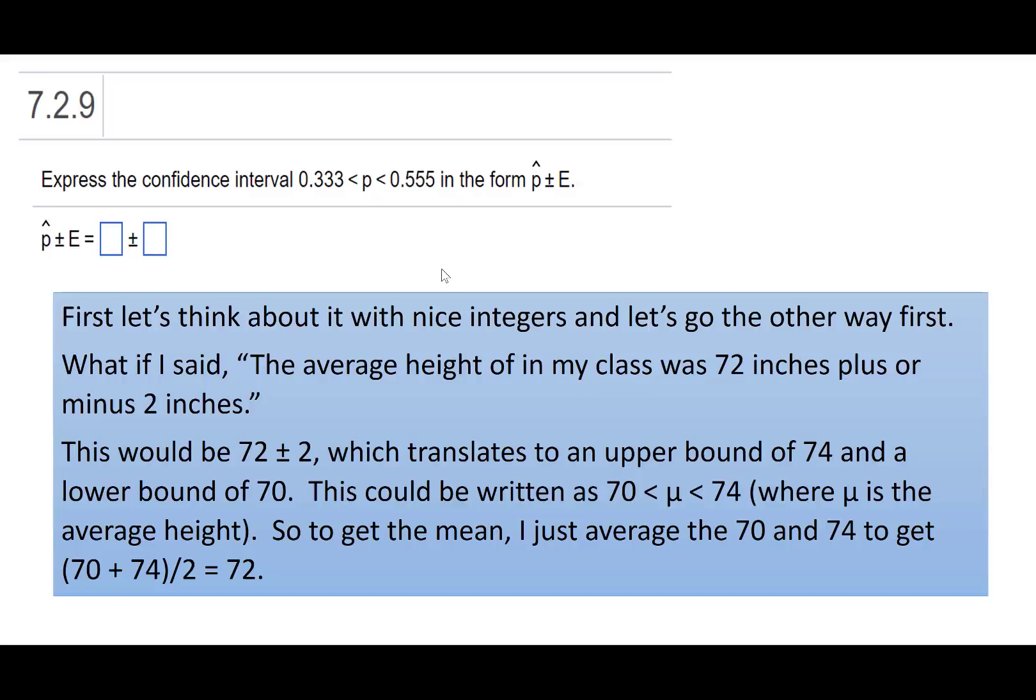And that translates to an upper bound of 74, lower bound of 70. So 72 plus 2, 72 minus 2. And we could write that similarly to how the p is written up there. We could write that as μ is greater than 70 and less than 74.